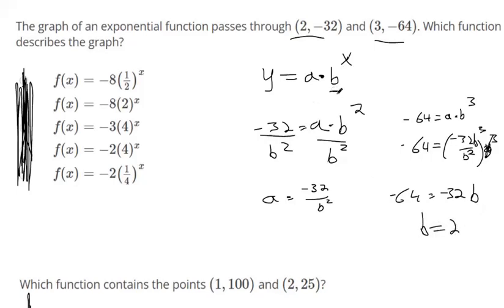So we know that this number on the inside should be 2. That rules this one out. It rules this one out. It rules this one out. It rules this one out. So b has got to be 2.